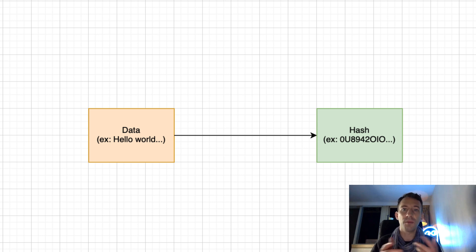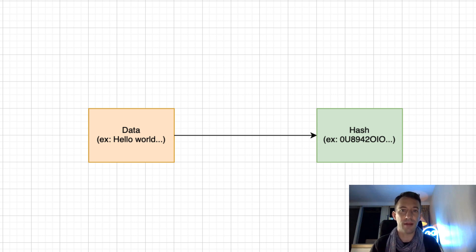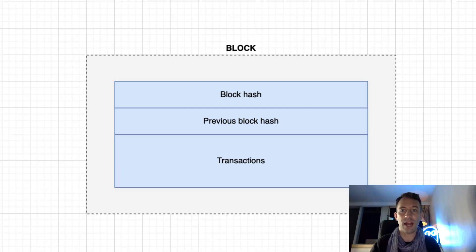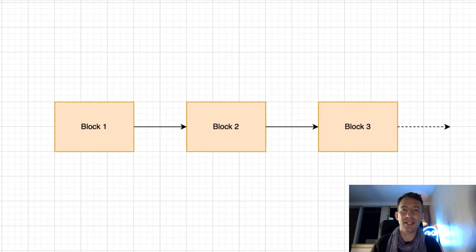You can go from the data to the hash very easily, but it's almost impossible to go from the hash to the data. If you change just one bit of the data, the resulting hash will be totally different. Each block contains a hash of its own transactions and the hash of the previous block. This way, the blocks are related to each other. The transactions inside a block are never modified — instead, we add new blocks on top of the previous ones for future transactions.